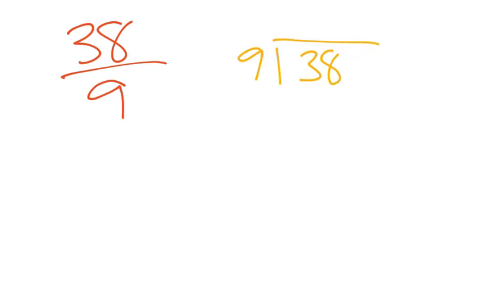Alright, 9 goes into 38. 9 times 1 is 9, 9 times 2 is 18, 9 times 3 is 27, 9 times 4 is 36. Ooh, that's pretty close. Alright, let's try that. Four wholes with two remaining.